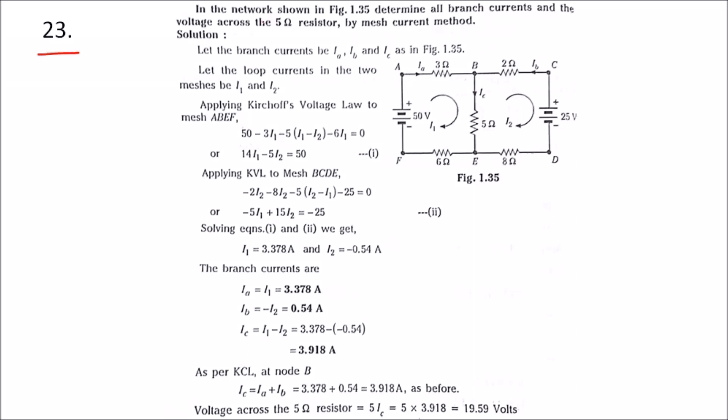Problem number 23. In the network shown in Figure 1.35, determine all branch currents and the voltage across 5 ohms by mesh current method. So this is the figure. We have to find the branch currents Ia, Ib, and Ic.